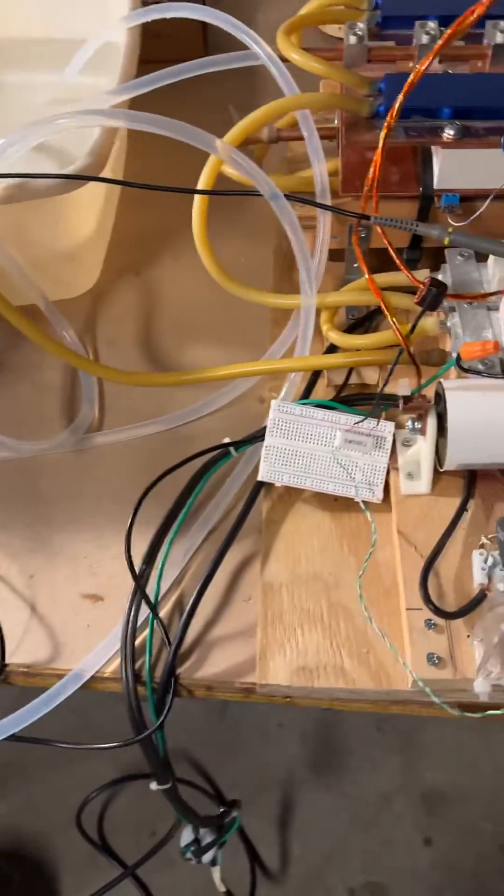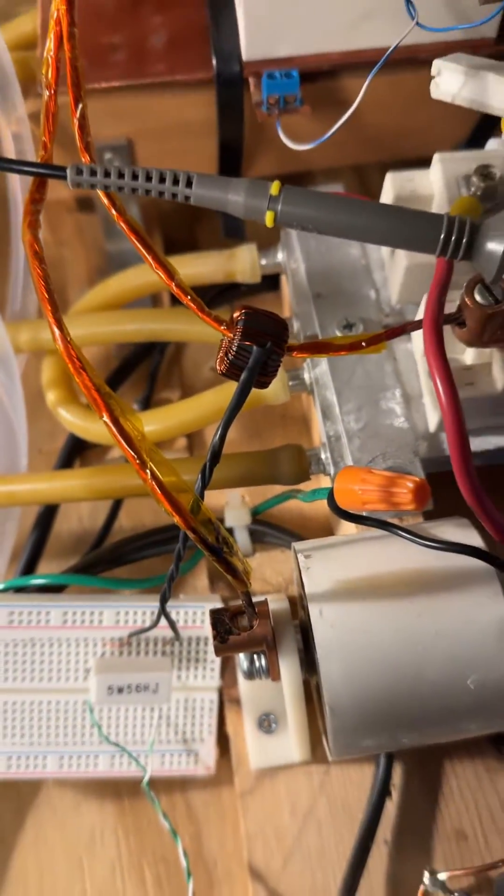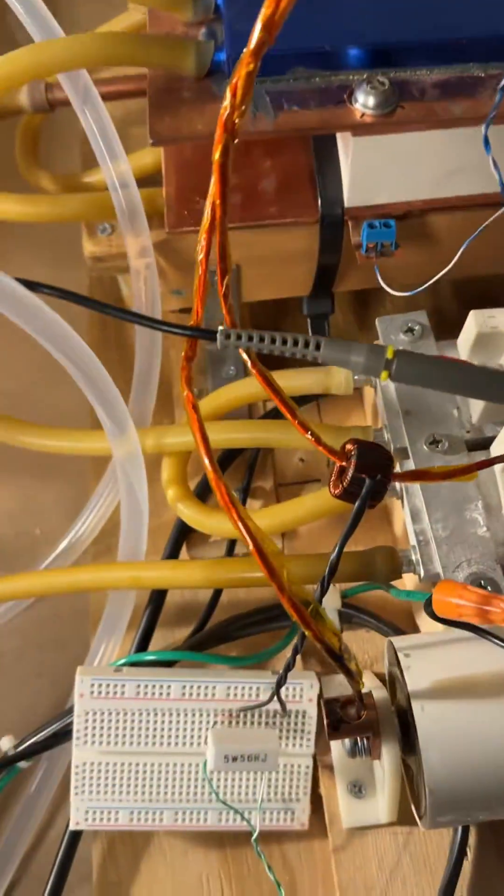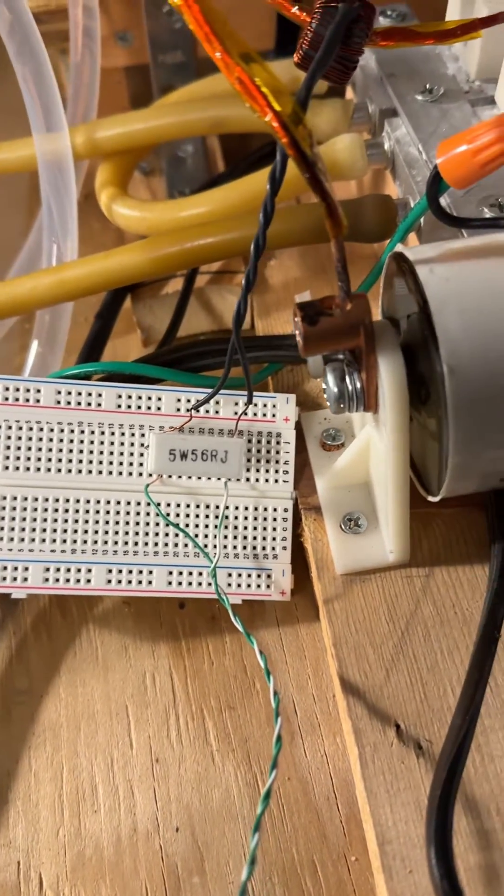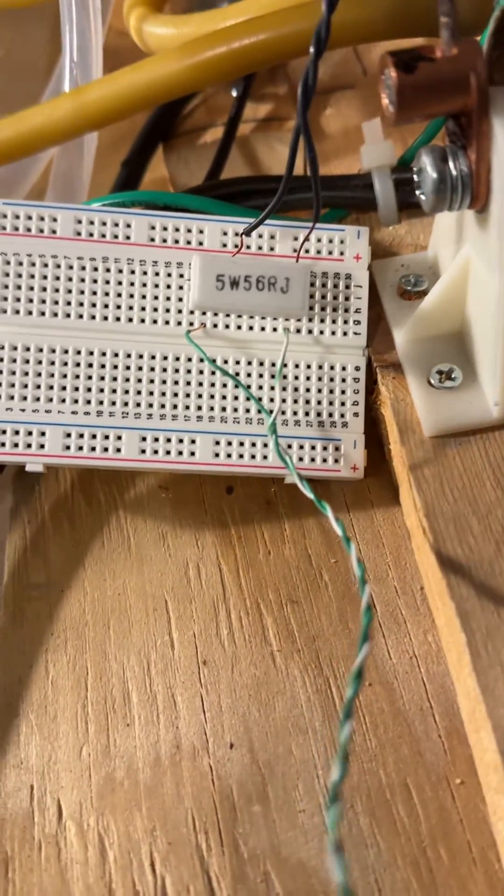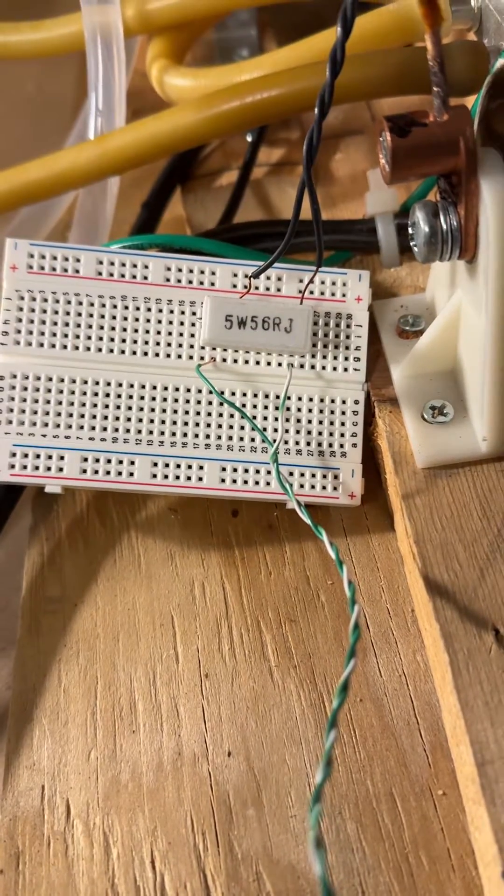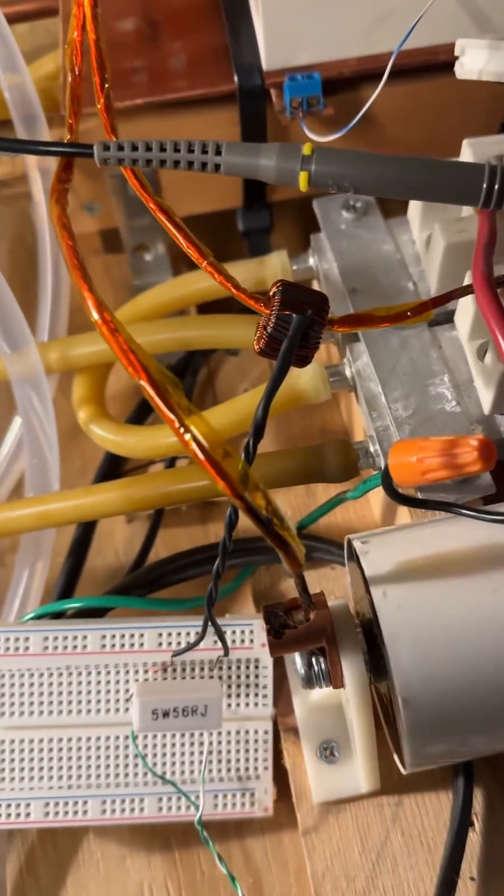In this test setup, I'm using feedback from the coupling transformer which has much lower current, so I don't need as much burden resistance. I'm just using this 156 ohm resistor which isn't even barely warm.